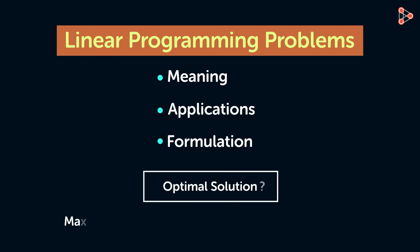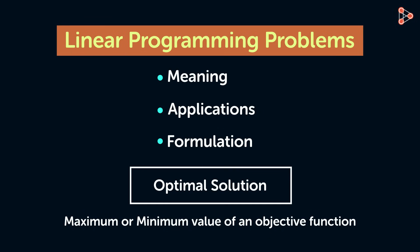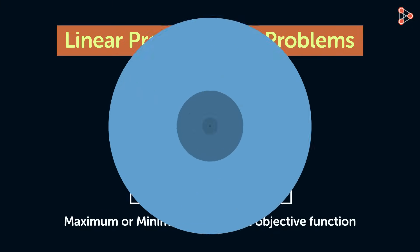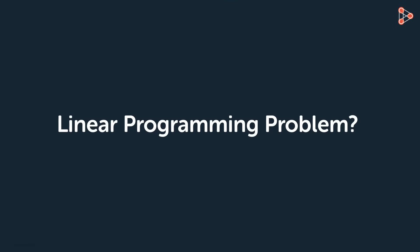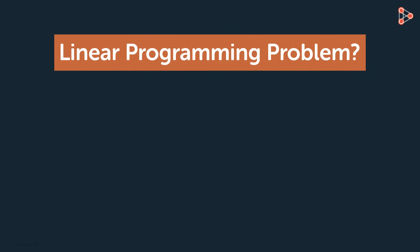The maximum or the minimum value of an objective function for the given problem is the optimal solution. But the question is, how do we solve a linear programming problem? Well, there are different ways to solve these problems.